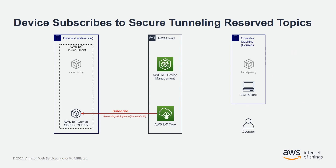Before we get started with the demo, let's review how Secure Tunnelling works. On the left, you'll see a remote device or thing which is considered the destination for the tunnel. In the middle, you have the AWS Cloud with AWS IoT Core and AWS IoT Device Management. And on the right, you have the operator who wants to execute a remote SSH session into the IoT thing. The operator machine is considered the source of the tunnel. The Local Proxy command line utility has been compiled and installed on the source, the operator machine.